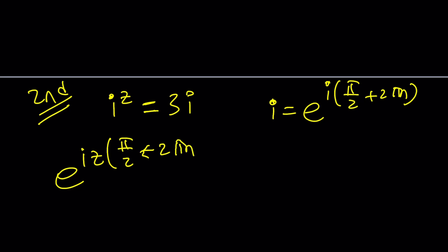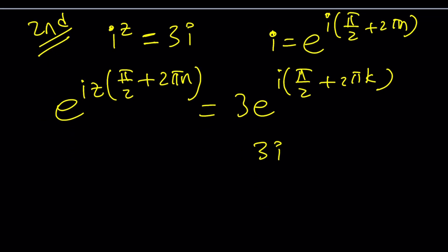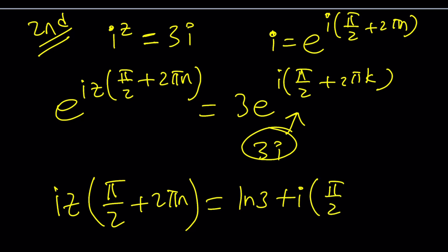You're going to get e to the i z multiplied by pi over 2 plus 2 pi n. So we get something very similar. And this equals 3e i pi over 2 plus 2 pi. This is 3i. And now, if you natural log both sides, you're going to get i z multiplied by 2 pi n. And then that's going to equal ln 3 plus, this is equal to 3i, i times pi over 2 plus 2 pi k. Now, the question is, do we need n?